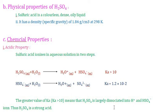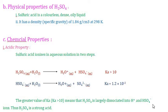In the first ionization step, H2SO4 reacts with water to form H3O⁺ ions and HSO4⁻. In the second step, HSO4⁻ reacts with H2O to form H3O⁺ and SO4²⁻, with Ka = 1.2 × 10². The large value of Ka indicates that H2SO4 is strongly dissociated, confirming it is a strong acid.